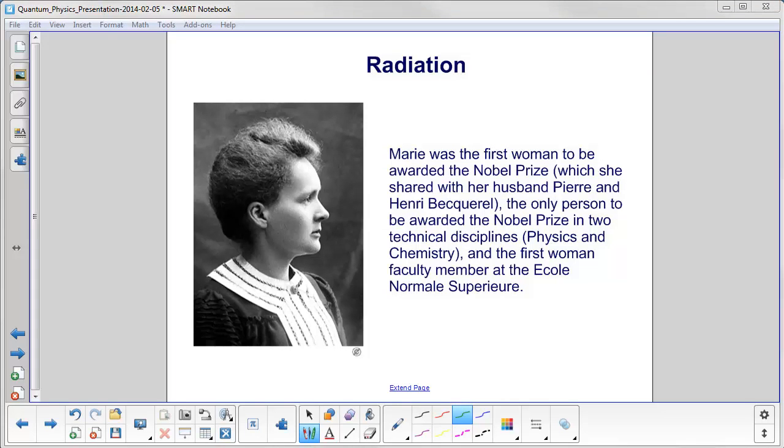Marie was the first woman to be awarded the Nobel Prize. She shared it with her husband Pierre and Henri Becquerel. She was also the only person ever to win the Nobel Prize in two different technical disciplines, physics and chemistry. She was also the first woman faculty member at the École Normale Supérieure.